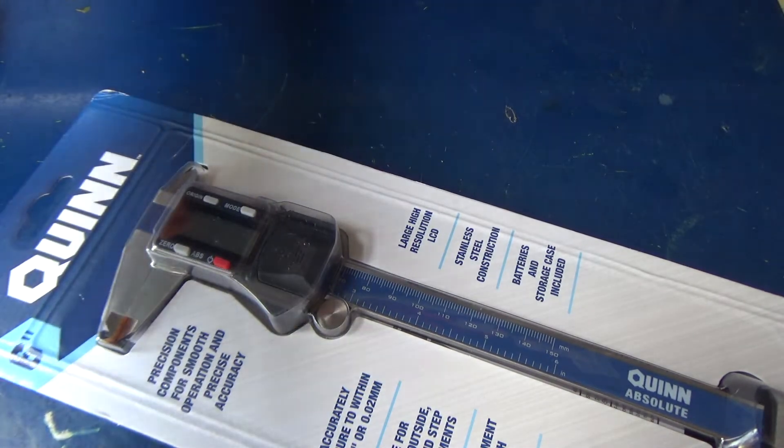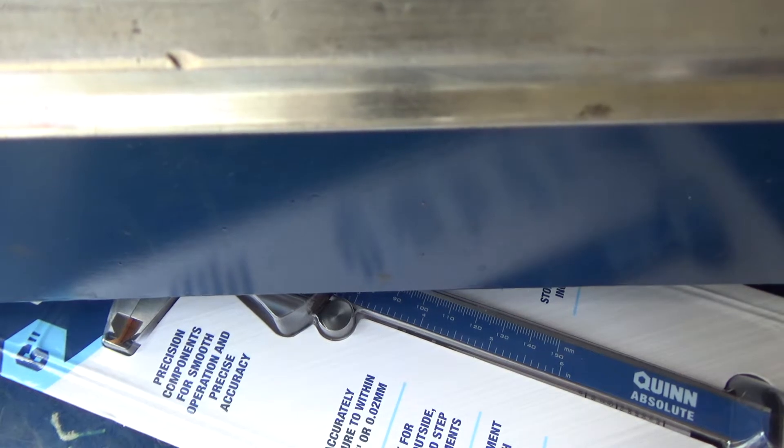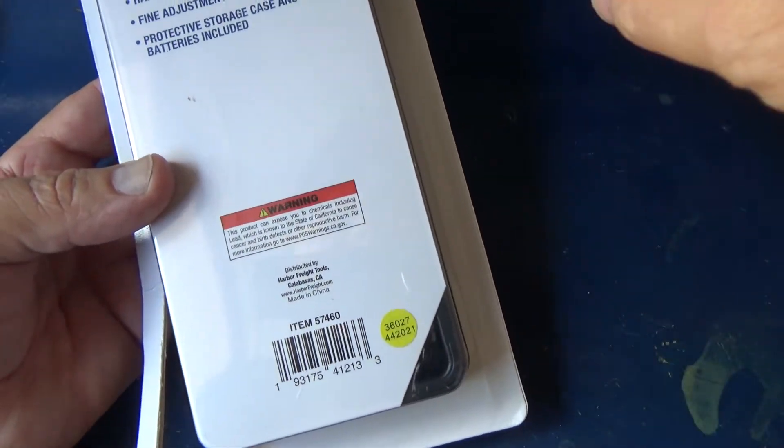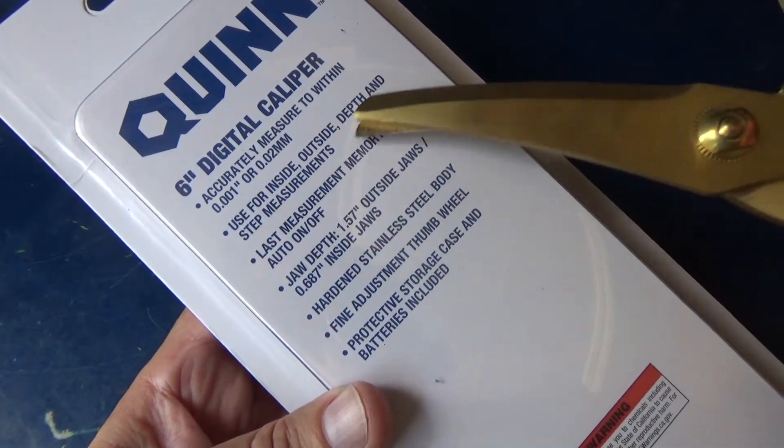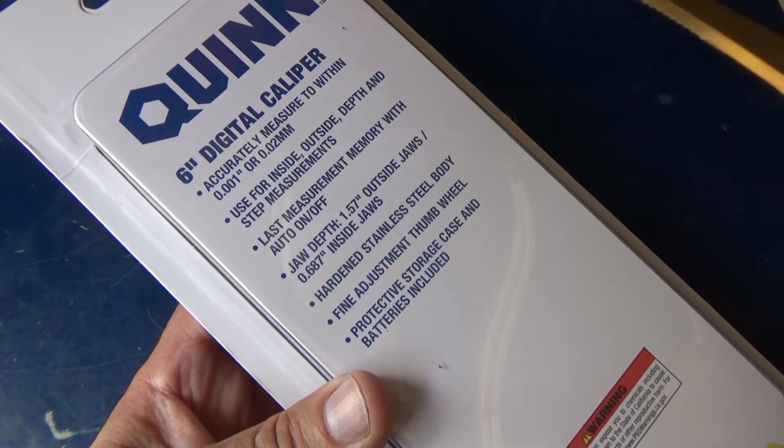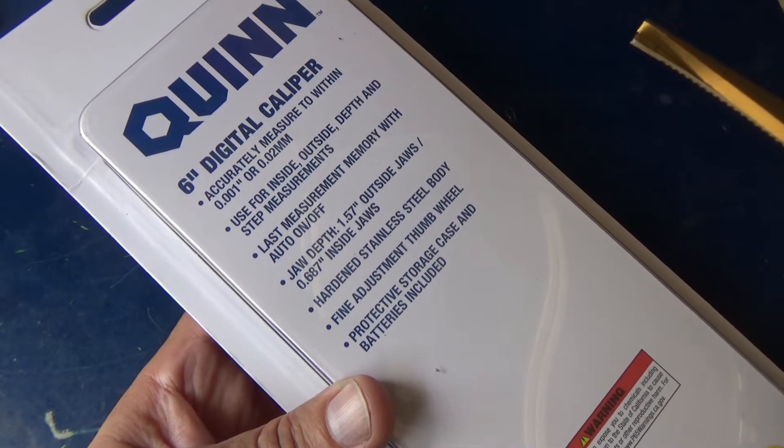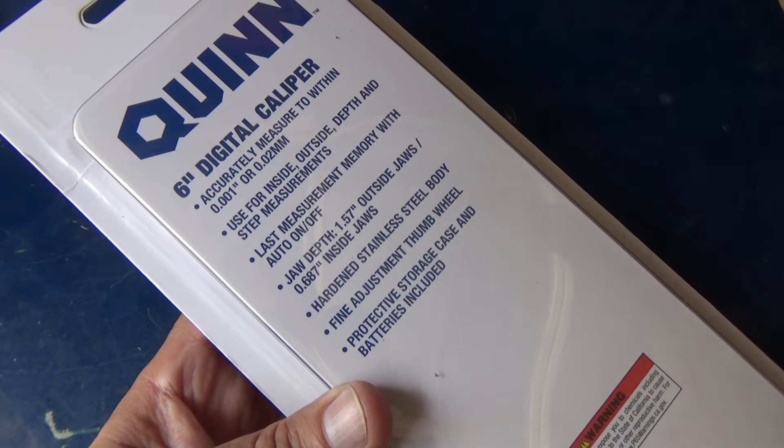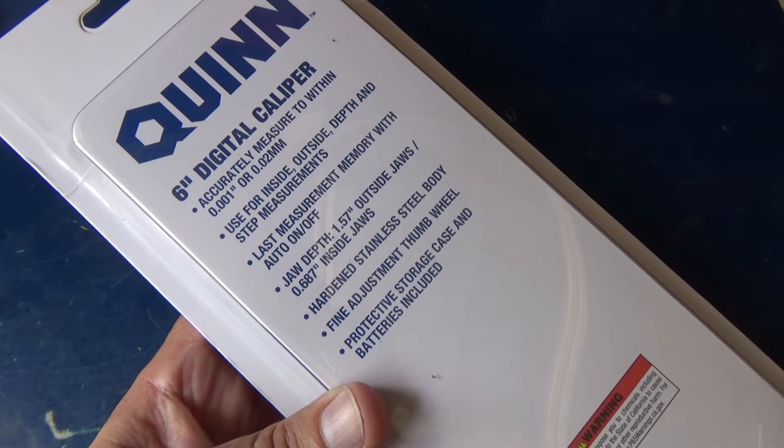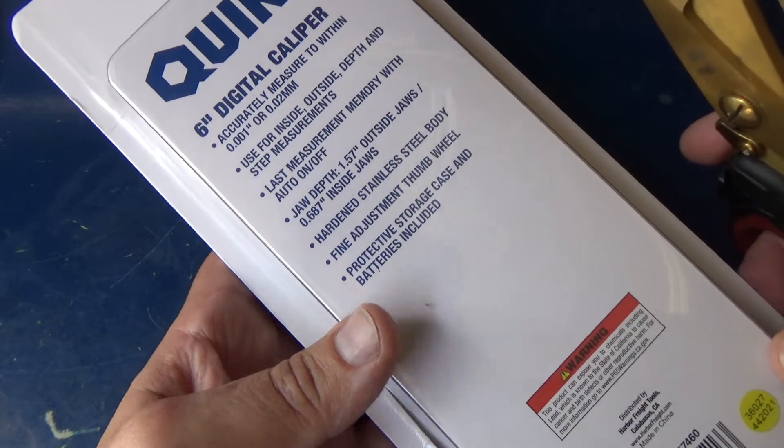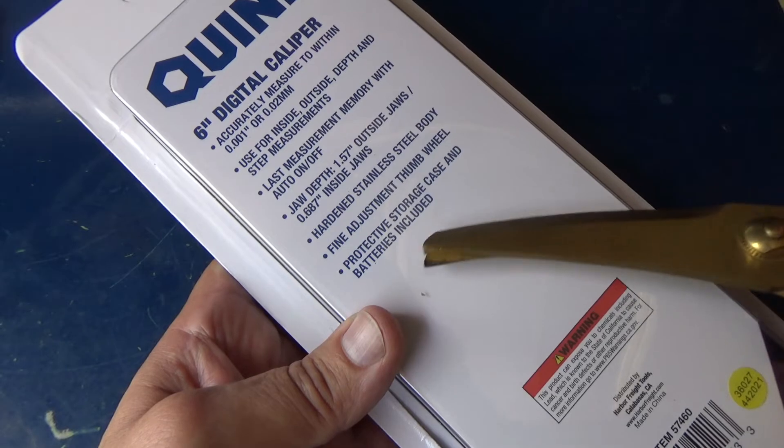Let's look at the back before I cut into this. There's your one thousandth inch inside and outside and depth measurements, last measurement memory with auto on-off so it will automatically shut off, which is good. There have been times I've left my Mitutoyos on and I've come out a week or two later and they're still on. They're Mitutoyos so they're engineered to where it's not going to drain the battery. I've used those Mitutoyos for years and I think I replaced the battery maybe once over three or four years. Stainless steel body construction, does have a thumb wheel and a protective case.